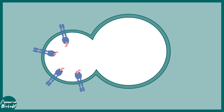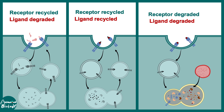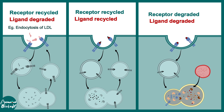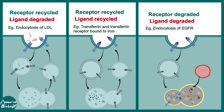After fusing to the endosome, the contents may be released, degraded, or recycled. One possibility is the receptor is recycled and the ligand is degraded — this happens in LDL endocytosis. Another possibility is that both receptor and ligand are recycled — this happens with transferrin and the transferrin receptor. A third possibility is that both are degraded — this occurs in EGFR endocytosis.